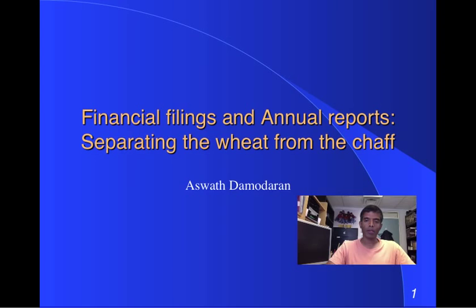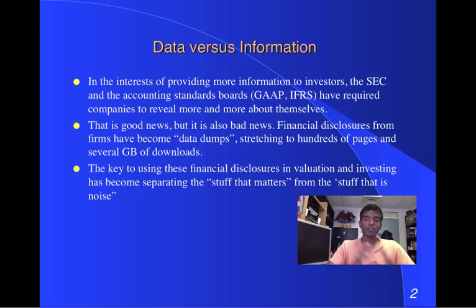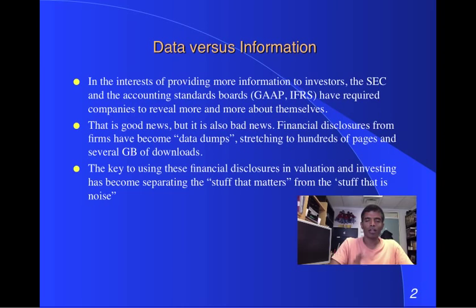Let's start with the basic premise. Over the last 20 or 30 years, information requirements on companies have increased, whether it's the SEC or the equivalent authority in your particular country. If you look at what is revealed to investors right now, it's a lot more than used to be revealed 15, 20, 25 years ago. That's a good thing, but there is a dark side to it. As companies reveal more and more information, what's increasingly happening to annual reports and 10-Ks is they're becoming data dumps — companies essentially put everything they can think of into those disclosures partly because they don't want to get sued.